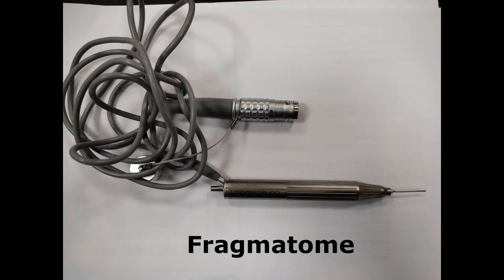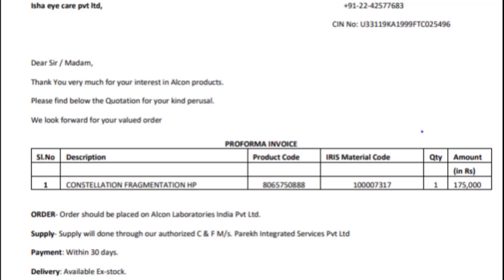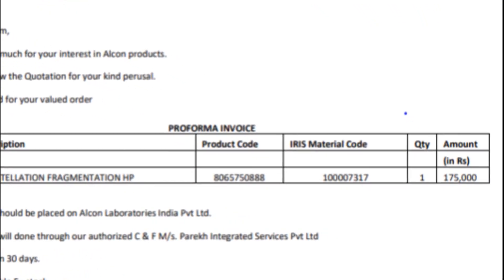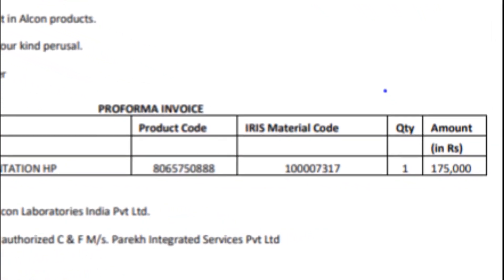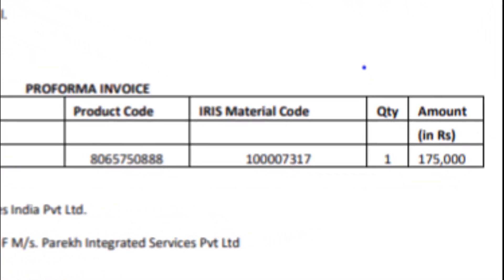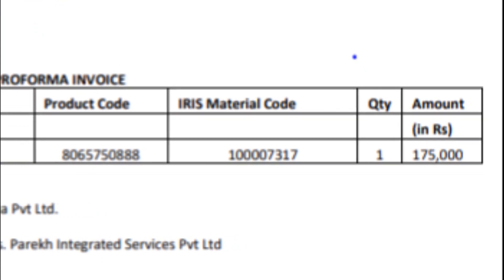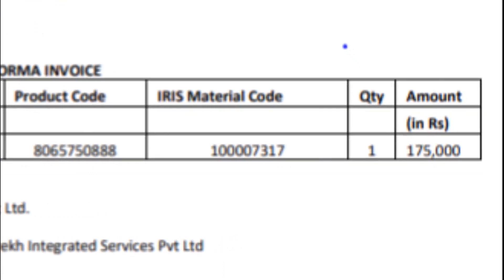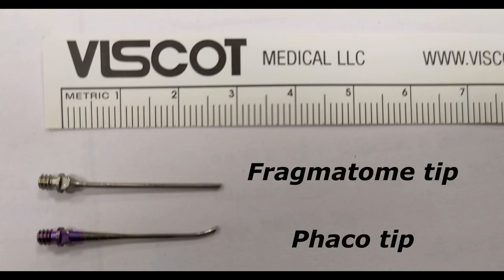In such cases, a vitreoretinal surgeon is called for, who usually manages the case with the help of a fragmentome. But the fragmentome costs around 1,75,000 rupees. So, is a fragmentome tip different from a phaco tip? We found it to be the same.